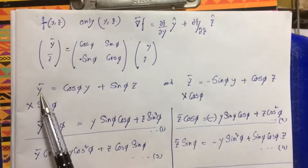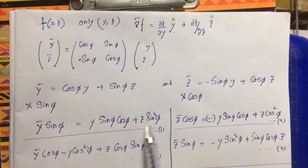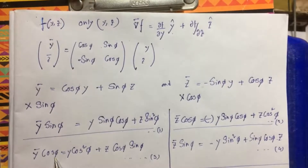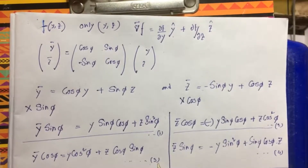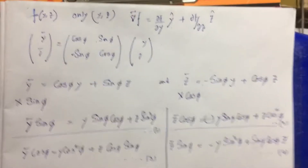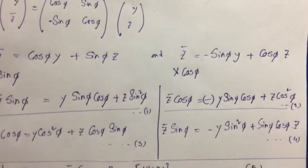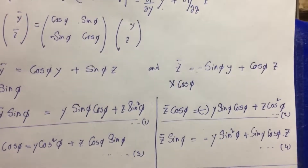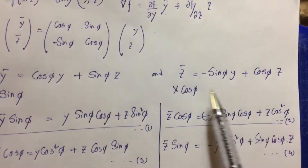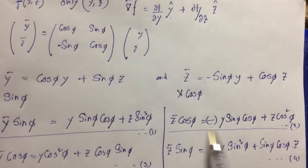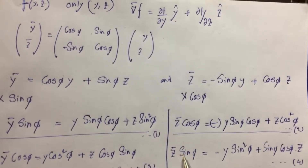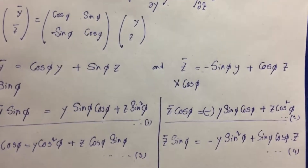First, we would like to multiply y_bar with sin(φ) and we get this. Then we multiply y_bar with cos(φ) and we get equation 3 — and this is equation 1. First we have multiplied z_bar. Let us have a close look. z_bar equals this. First we have multiplied z_bar with cos(φ) and we get equation 2. Then we have multiplied z_bar with sin(φ) and we get equation 4.